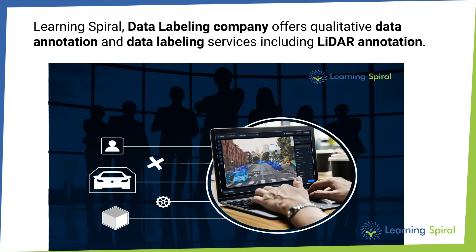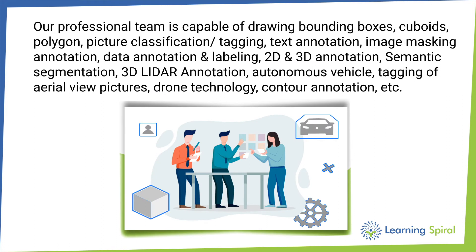Learning Spiral, a data labeling company, offers qualitative data annotation and data labeling services including LiDAR annotation. Our professional team is capable of drawing bounding boxes, cuboids, polygon, picture classification tagging, text annotation, image masking annotation, data annotation and labeling, 2D and 3D annotation, semantic segmentation, 3D LiDAR annotation, autonomous vehicle, tagging of aerial view pictures, drone technology, contour annotation, and more.